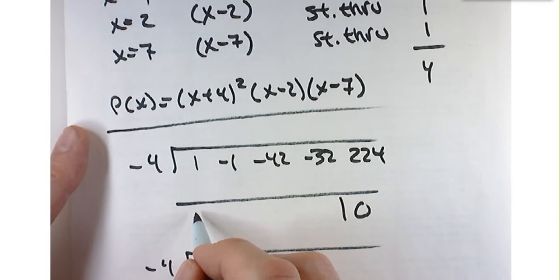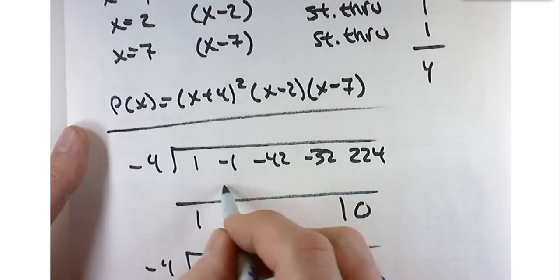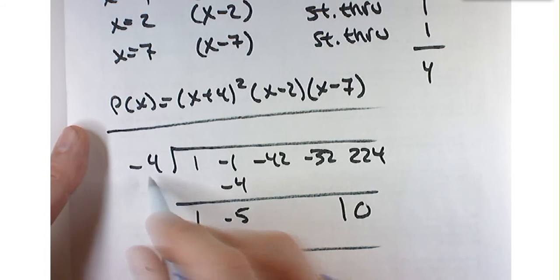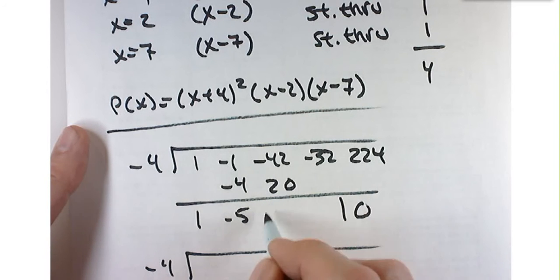So add going down is 1, negative 4 gives me negative 5, it gives me a positive 20.